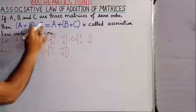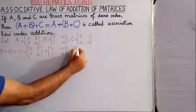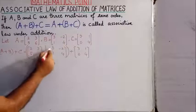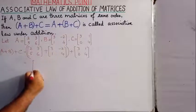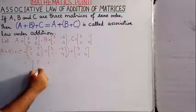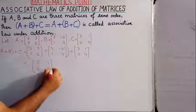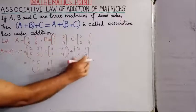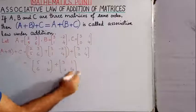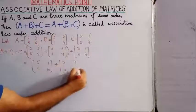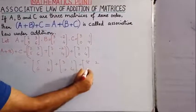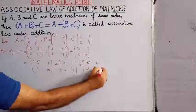Matrix C has elements 3, 1, 0, 4. Now we add A and B: 2 + 3 = 5, 3 + (−2) = 1, 5 + 1 = 6, 6 + 4 = 10. Students, I have added these two matrices. Now adding matrix C: 5 + 3 = 8, 1 + 1 = 2, 6 + 0 = 6, 10 + 4 = 14. This is the left-hand side answer.